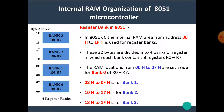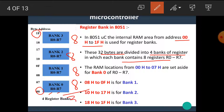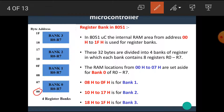In the 8051 microcontroller, the internal RAM area from address 00H to 1FH is used for the register banks. These 32 bytes are divided into four banks of registers, in which each bank contains eight registers R0 to R7. The RAM locations from 00H to 07H are set aside for bank 0, 08H to 0FH for bank 1, 10H to 17H for bank 2, and 18H to 1FH for bank 3.